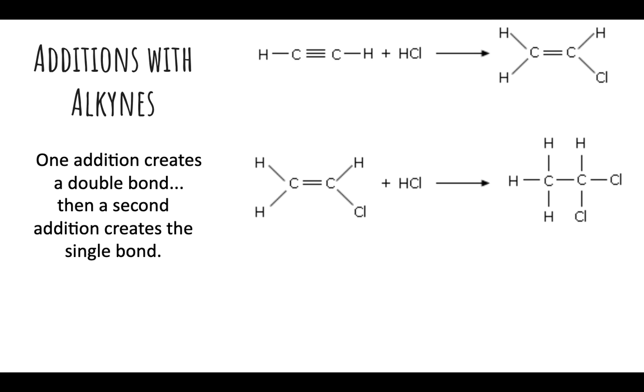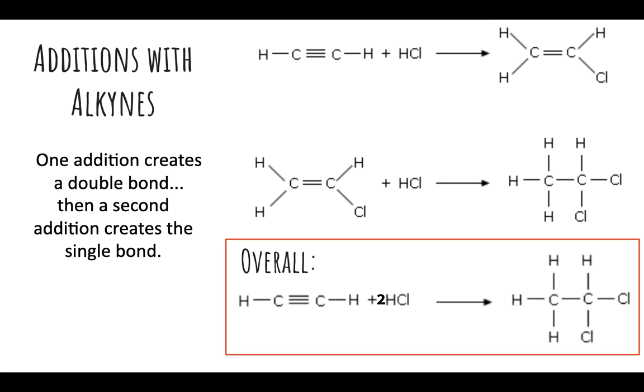Now we have a carbon with two chlorines on it and a carbon with two extra hydrogens from what it started with. So overall, when you have the addition with an alkyne, you're going to have two of whatever you're adding, and you're going to do the addition twice to get your final compound.